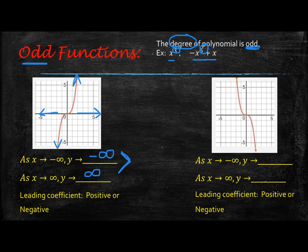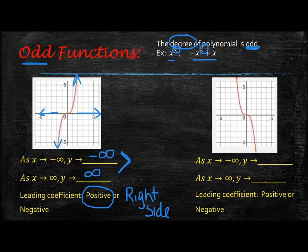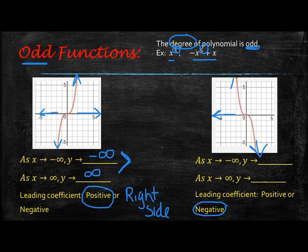Is the leading coefficient positive or negative? For odd functions, this is kind of tricky — you're looking at the right side. In this example, the right side is going up, and therefore the leading coefficient is positive. If we look at the one on the right, the right side is going down, and so the leading coefficient is negative. On odd functions, you just look at the right side. Now let's fill in the end behavior: as x approaches negative infinity, y goes up — positive infinity. As x approaches positive infinity, the y value is going down — negative infinity.